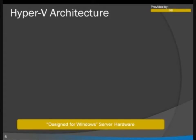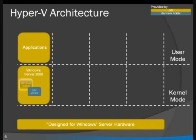So the first thing you have is the design for Windows Server hardware down the bottom. And this is important — we can run on pretty much anything that Windows Server runs on. I say pretty much because we have two requirements: it's got to be a 64-bit platform, and it's got to have hardware virtualization support, so either AMD-V or Intel VT.